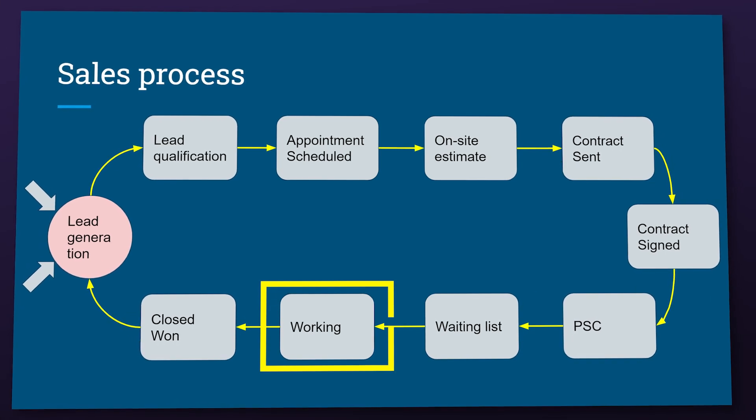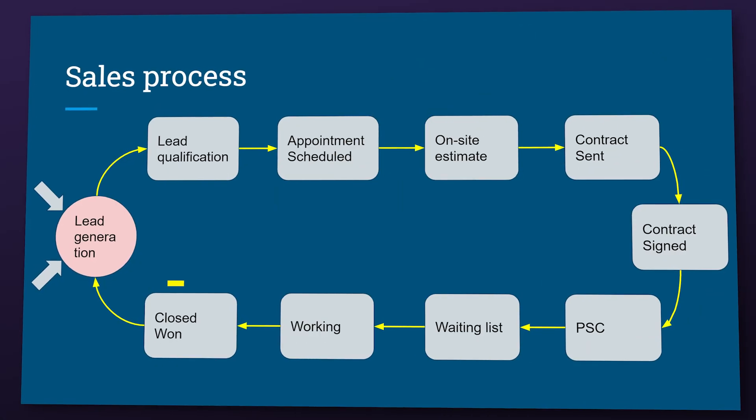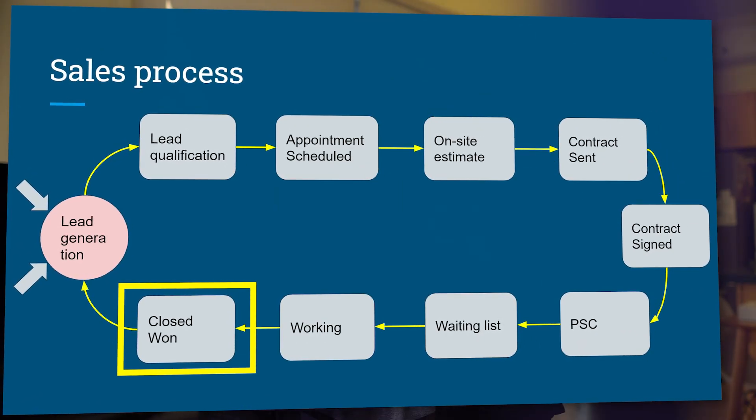Then we have working. At this stage we complete all the work, send invoices, get paid and more. Finally we have closed won. After we complete the work, register the warranties and so on, we move it to closed won, which is the final stage of the process. At this point we send emails about our review programs and referral programs, and ask the client to complete a survey. This step also sends information to our accountant regarding sales commissions.